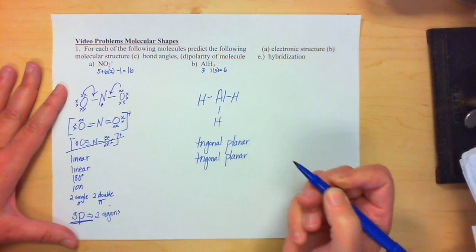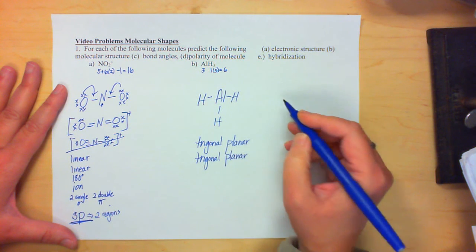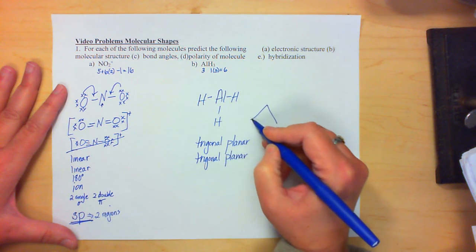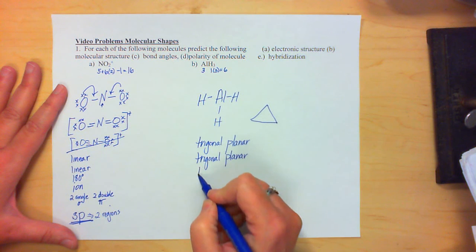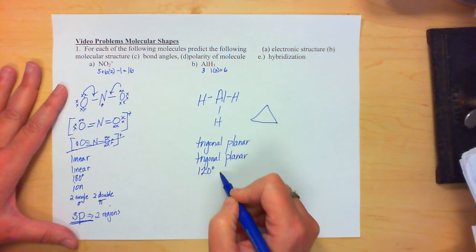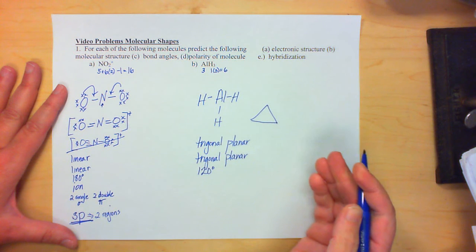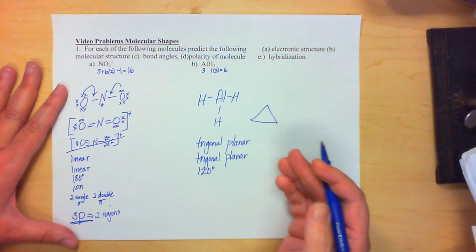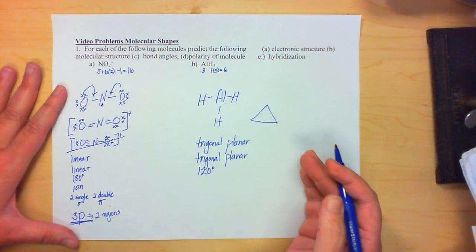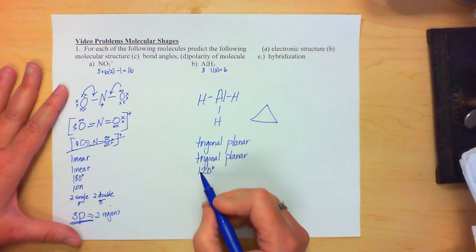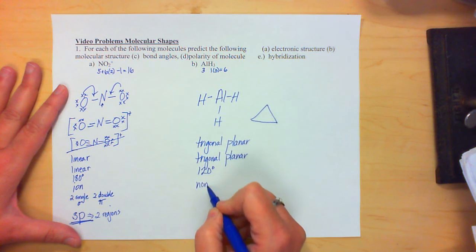Basically, trigonal planar comes out to be a perfect triangle. That means the angles are all going to be 120 degrees. Because they're all identical, then there's no distortion of them.